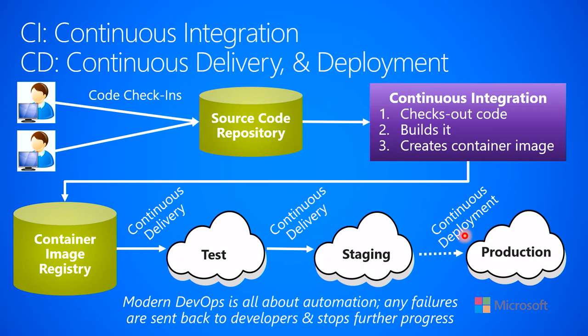Some people just use automated continuous delivery, and then when they really feel comfortable, they have a human being intervene and force the deployment to occur, rather than having that fully automated. Modern DevOps — which is really what we've been talking about here — is all about automating these steps. You want to get to a place where human beings are writing and checking in code, and from that point forward, as much as possible is automated.